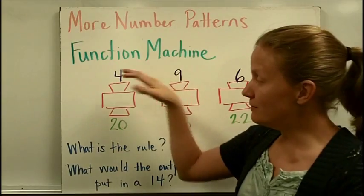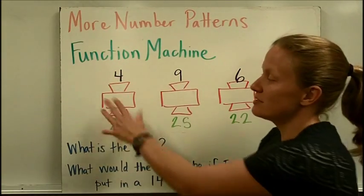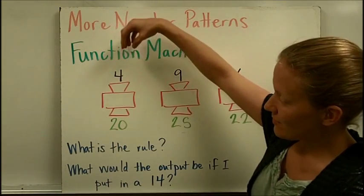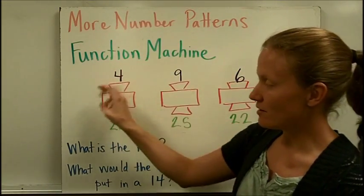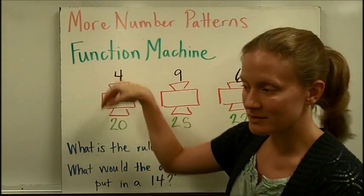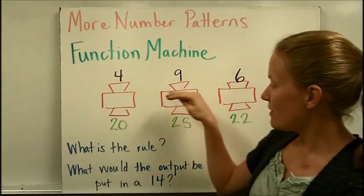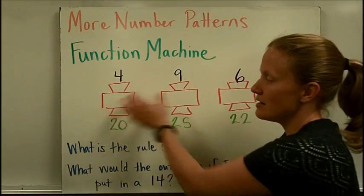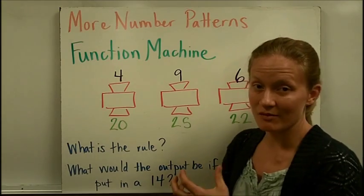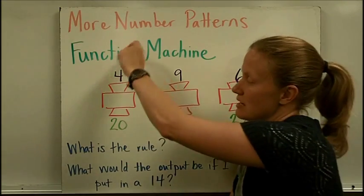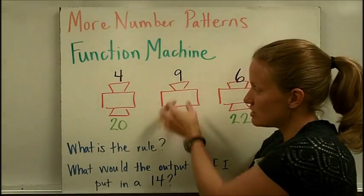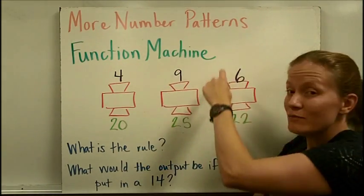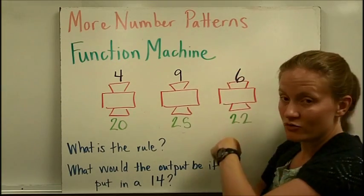In a problem where you see a function machine, you're going to see some sort of box or contraption where you think about the numbers going in the box, the box doing something to the numbers and spitting the number back out. Each time in this particular question, this box is repeated and it's going to do the same thing to each number that it gets. You're going to see in goes a 4, out goes a 20. In the same machine, if you put a 9 in, you're going to get a 25 out. In the same machine, if you put a 6 in, you're going to get a 22 out.